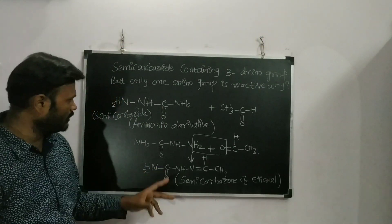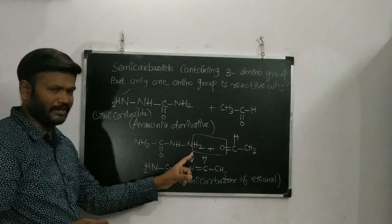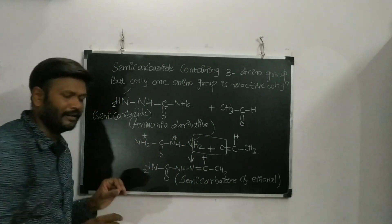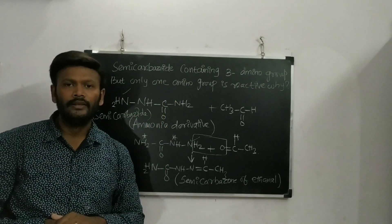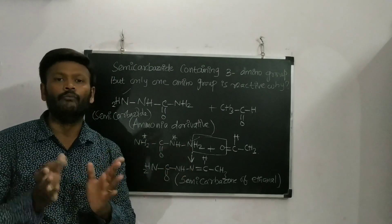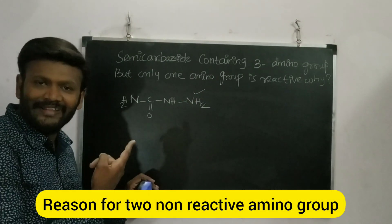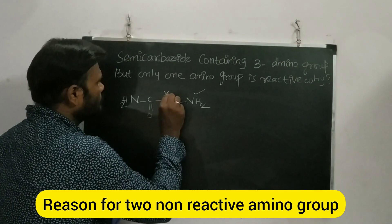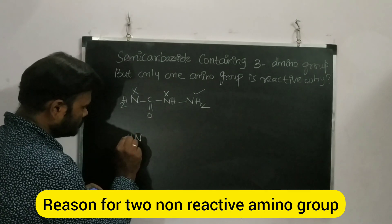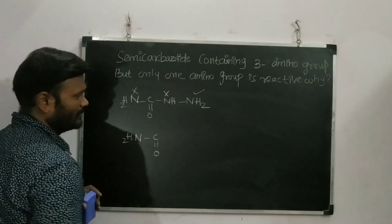Now, out of the three nitrogens in semicarbazide, which nitrogen actually participates in this reaction? Only this one nitrogen — the NH between the carbonyl and the terminal NH₂ — is involved in the reaction. The other two nitrogens are not involved. Why? That is the key question — why are these two nitrogens not reactive while only this one is?